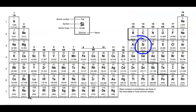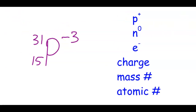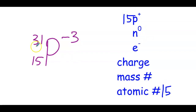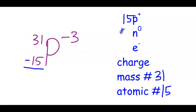Protons are positively charged and electrons are negatively charged. If you add on your calculator a positive 14 plus a negative 14, you get zero — so we have nothing at the top right; this is a neutral atom. Another example: the atomic number is 15, which tells us we have 15 protons. The mass number is 31, so if I subtract 31 minus 15, I get the neutrons, which are 16.